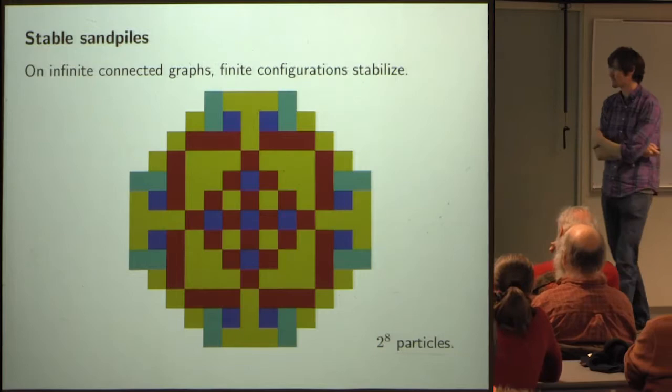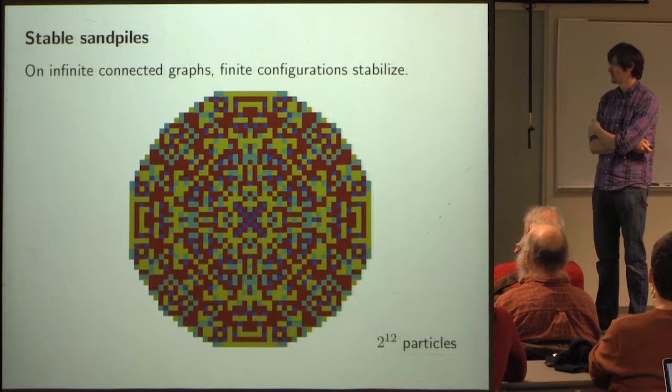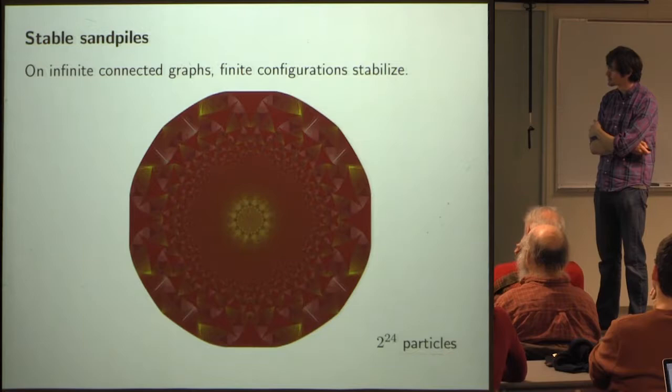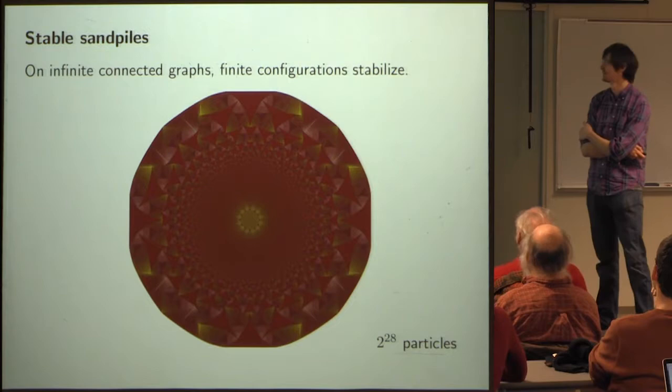This is what happened when we started with 24 chips. This is what happens if you start with 256 chips, two to the 12th, two to the 16th, two to the 20th, two to the 24th, and two to the 28th.